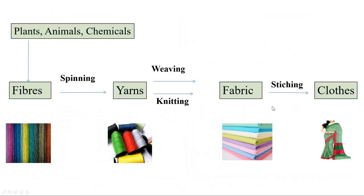This chart summarizes the entire chapter: fibers obtained from plants, animals, or chemicals are converted into yarns by spinning; yarns are converted into fabric by weaving and knitting; and ultimately fabrics are converted into clothes by stitching.